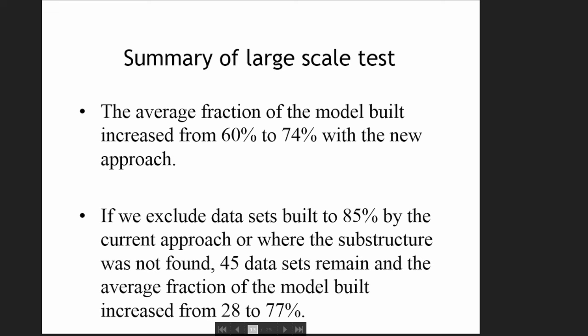In summary, the new combined approach gives an average increase from 60% to 74% across all 150 data sets. Excluding data sets already built to 85% by the current approach or where the substructure was not found, about 45 data sets remain, where the average fraction of the model built increased from 28% to almost 80%. This is essentially the difference between success and failure, which was very encouraging.